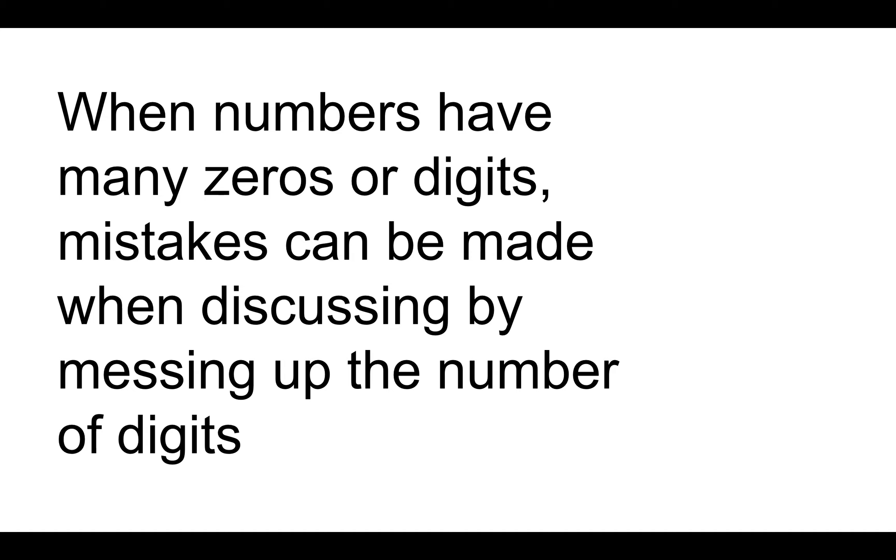So the big picture idea here is that when numbers have many zeros or many digits, mistakes can be made when transferring the numbers or when discussing the numbers of digits. And that's where we start to see something called scientific notation, which is like an abbreviation for these big numbers.